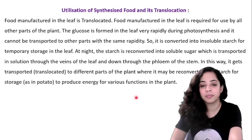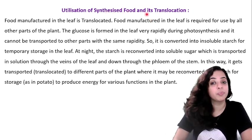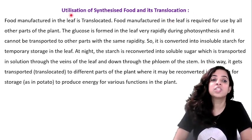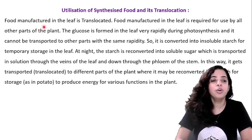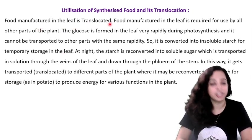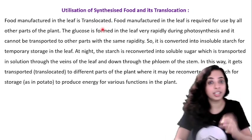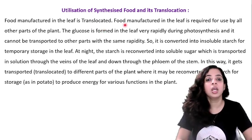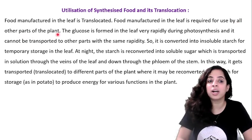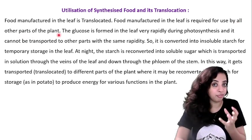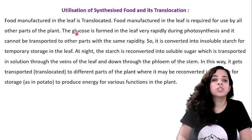Now, what happens to the synthesized food and how is it translocated? This is very important from an MCQ point of view. Food manufactured in the leaf is translocated — we say translocated because it changes its location. Food produced in the leaf is required for use by all other parts of the plant as well.